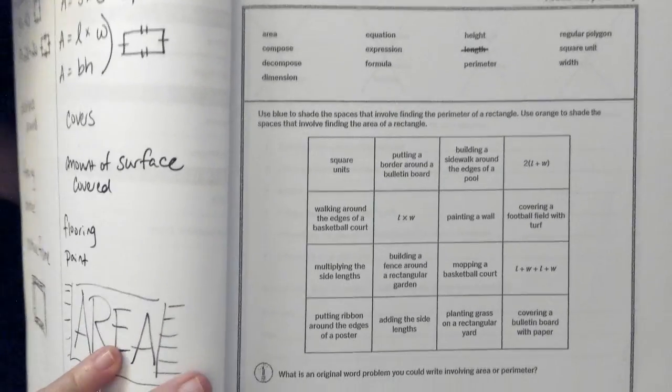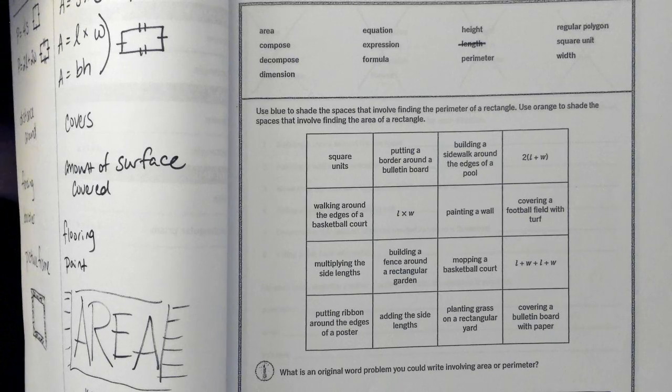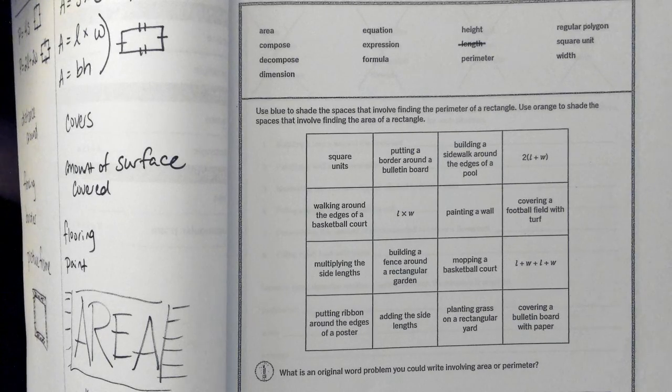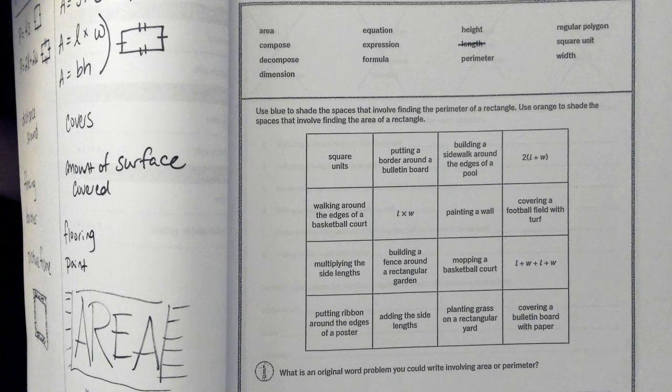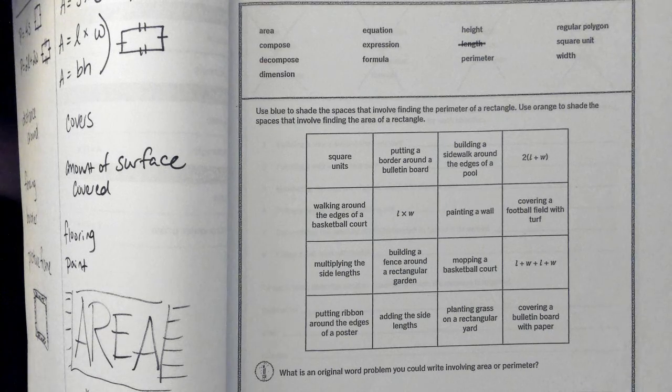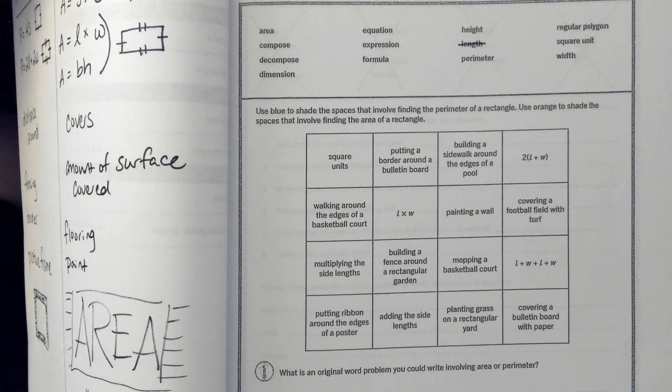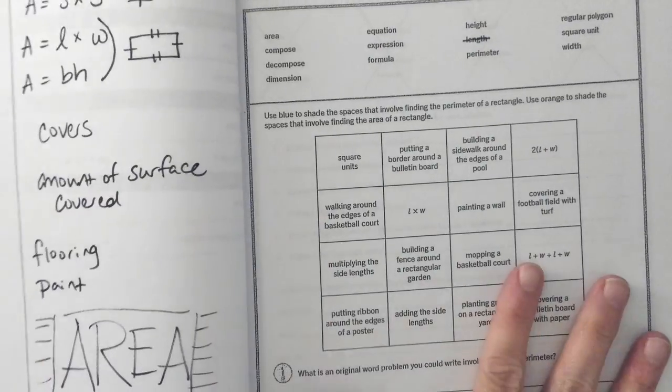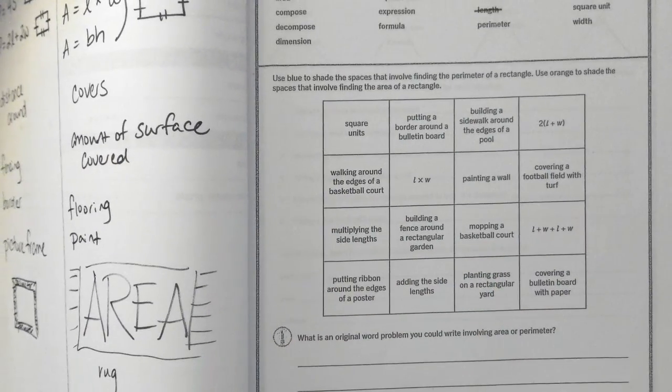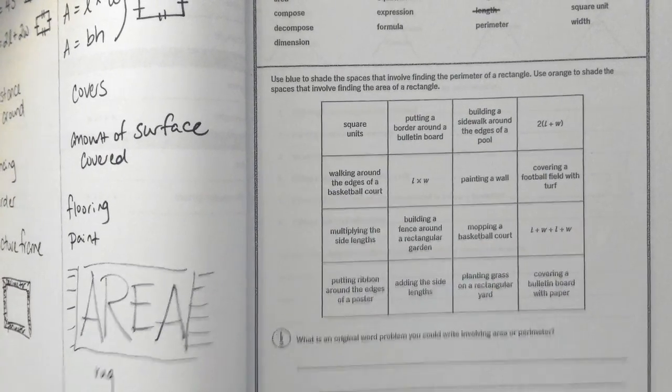On this page, it says use blue to shade the spaces that involve finding the perimeter of a rectangle. Use orange to shade the spaces that involve finding the area of a rectangle. And these notes should help you with that. There are two kind of thinking questions at the bottom.